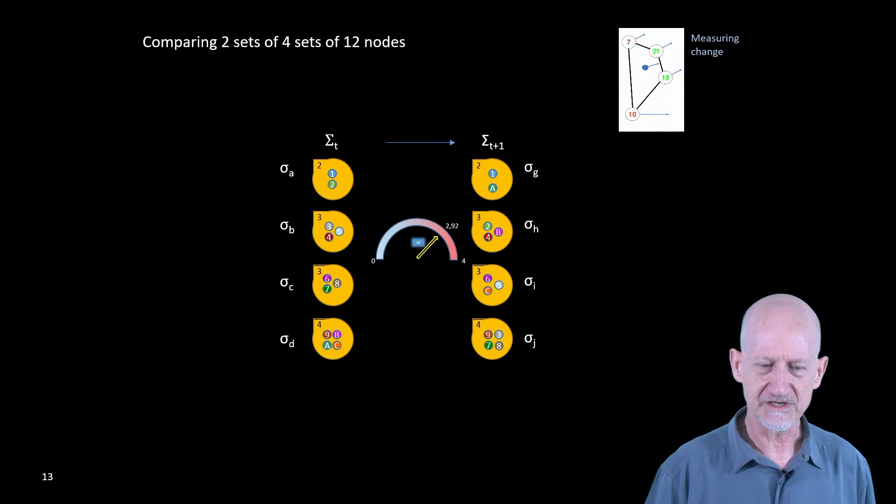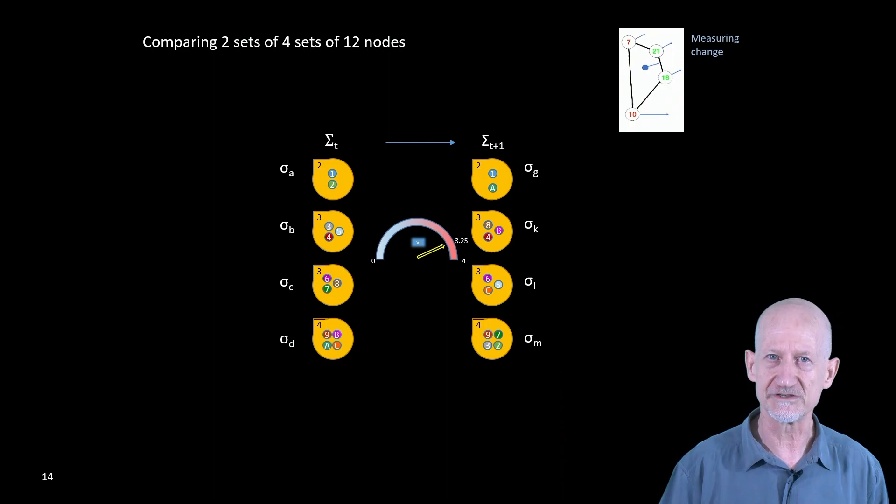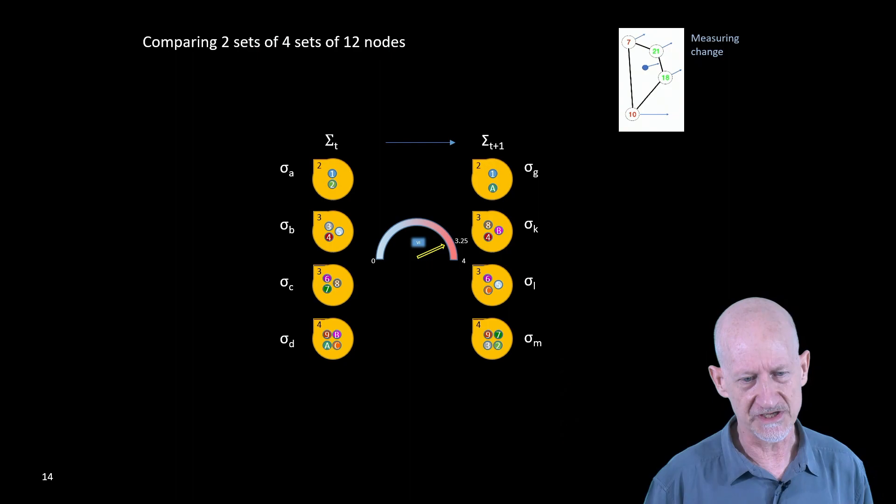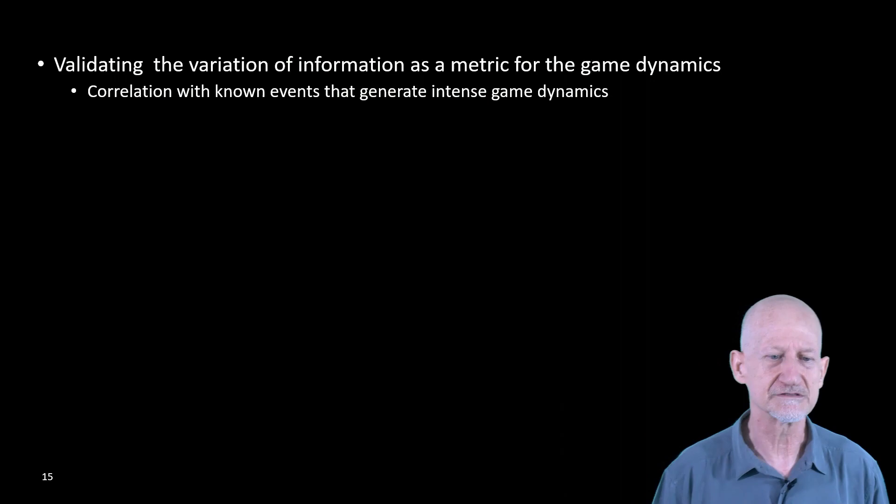As the changes increase, the variation of information increases up to a maximum that is basically gated by the actual partition of the network. So this is basically how we measure the changes as the game progresses.